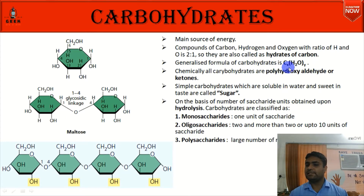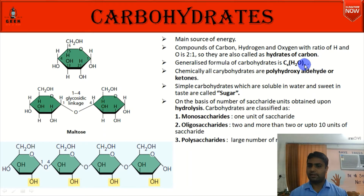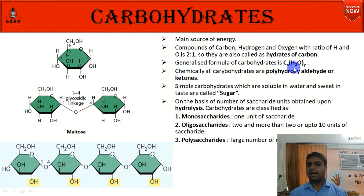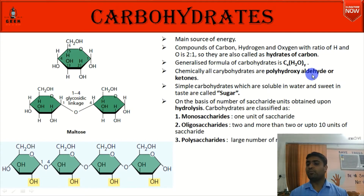The general formula of carbohydrate is CX(H2O)Y — meaning you can assign any value to X and Y. For example, C6H12O6 — if you put carbon quantity as 6 and water units as 6, you get C6H12O6. So chemically, all carbohydrates are polyhydroxy aldehydes or ketones.